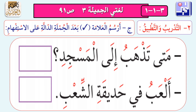ارسم علامة صح بعد الجملة الدالة على الاستفهام: متى تذهب إلى المسجد؟ أما جملة: ألعب في حديقة الشعب، فهي جملة عادية تنتهي بنقطة. الاستفهام يتكون من أداة وجملة وعلامة استفهام، أما الجملة العادية فتبدأ بكلام عادي وتنتهي بالنقطة. بالطبع كلنا اخترنا الجملة الأولى.